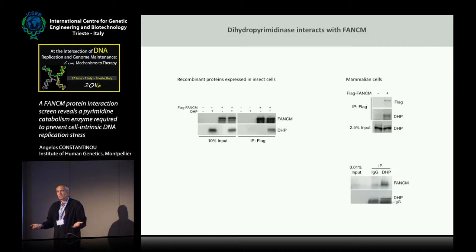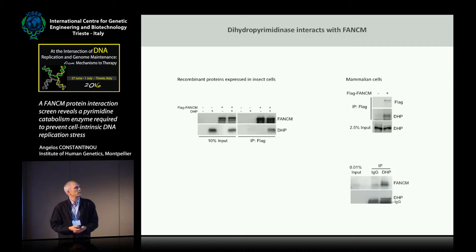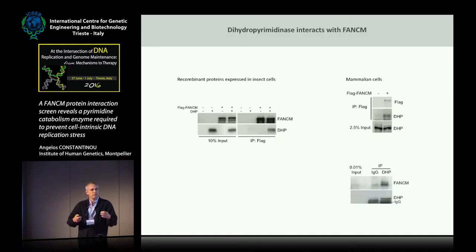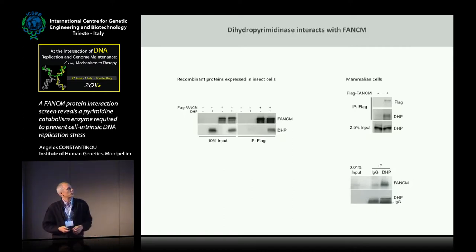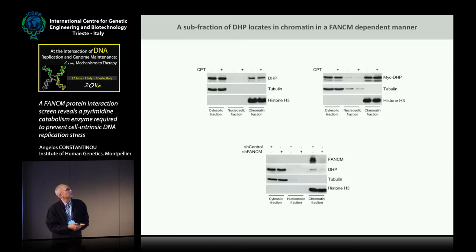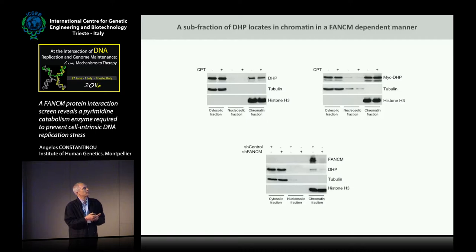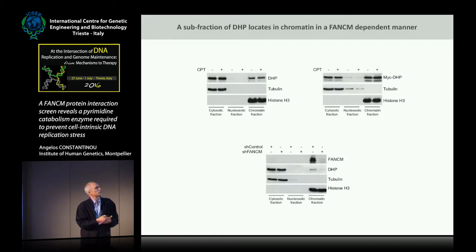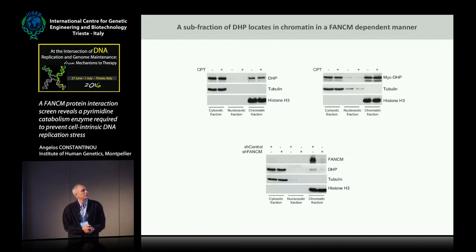We validated this association using reciprocal immunoprecipitation of both endogenous and recombinant proteins expressed in mammalian and insect cells. We were concerned that this association could be induced by the breakage of cellular compartments, because dehydropyrimidinase is mainly described as a cytoplasmic protein and FANCM is chromatin-associated. So we performed biochemical cell fractionation and probed for endogenous DHP, which localizes mainly in the cytoplasm, but with a subfraction in the chromatin fraction. The signal corresponding to DHP in chromatin is lost upon knockdown of FANCM, whereas it remains intact in the cytosolic fraction, suggesting that FANCM anchors a subfraction of dehydropyrimidinase to chromatin.